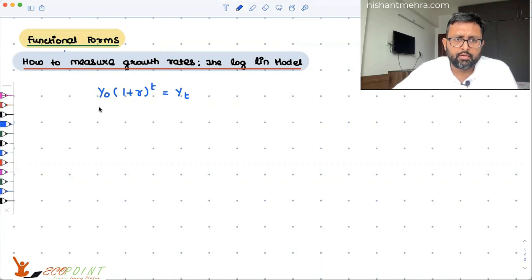So if the time period would have been just one, then you could have written it like y0 plus r*y0, something like this. And when it is going to grow over different time periods, then you're going to be using t in this fashion.